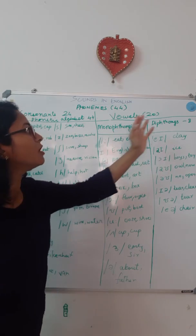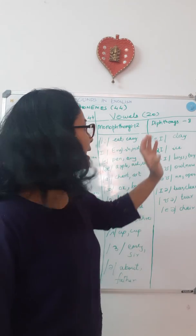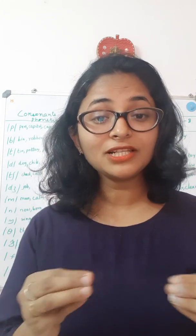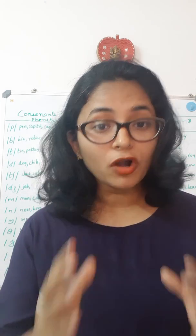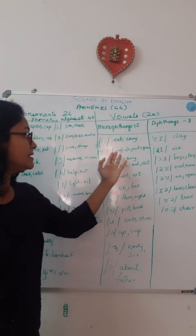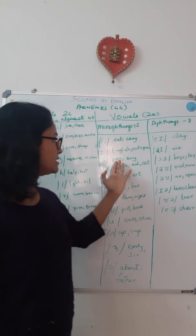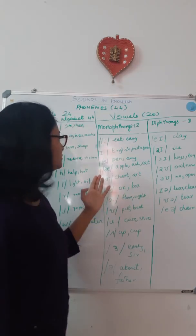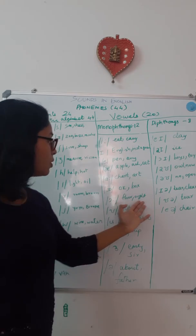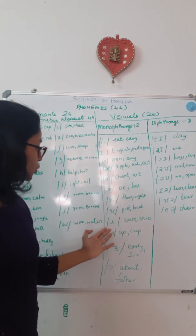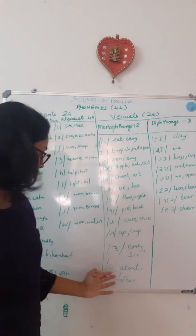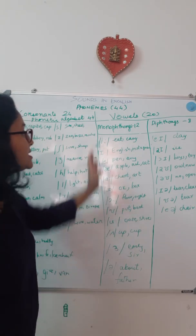These vowels are divided into monophthongs and diphthongs. There are 12 monophthongs and 8 diphthongs. Monophthongs are called pure vowels because vowels do not change quality when prolonged — they are monophthongs or pure vowels. For example: /iː/ as in eat; /ɪ/ as in English, Instagram; /e/ as in pen; /æ/ as in apple, ash, cat; /ɑː/ as in chart, art; /ɒ/ as in ox, box; /ɔː/ as in flow; /ʊ/ as in put, book; /uː/ as in ooze, shoes; /ʌ/ as in up, cup; /ɜː/ as in early, surd; /ə/ as in about, father. So these are the monophthongs.